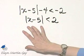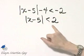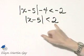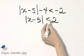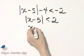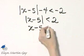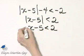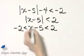And now I have an absolute value less than some positive number. For this absolute value to be less than 2, what's inside the absolute value bars, the x minus 5, must be between 2 and negative 2.